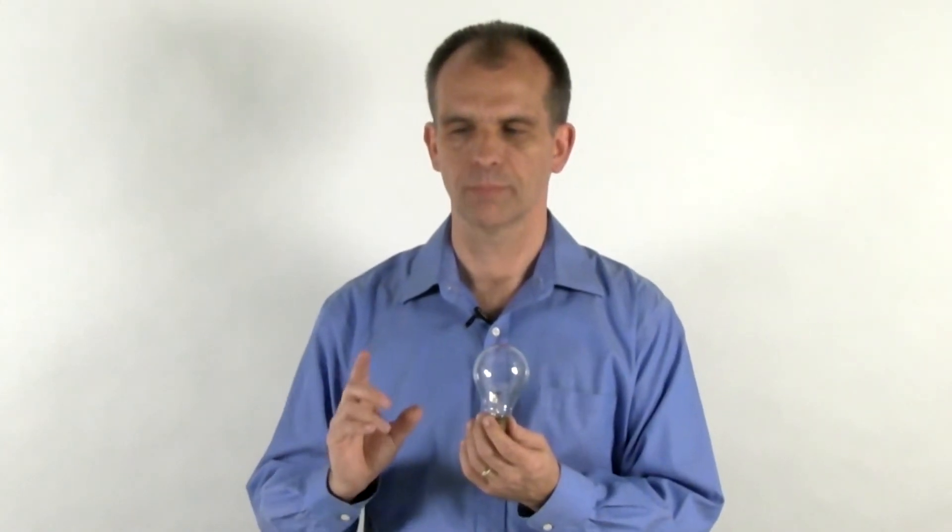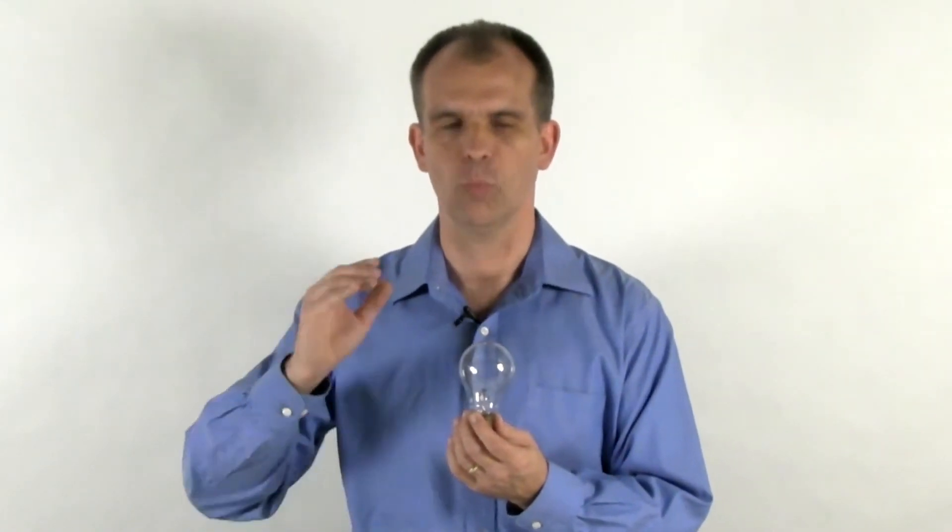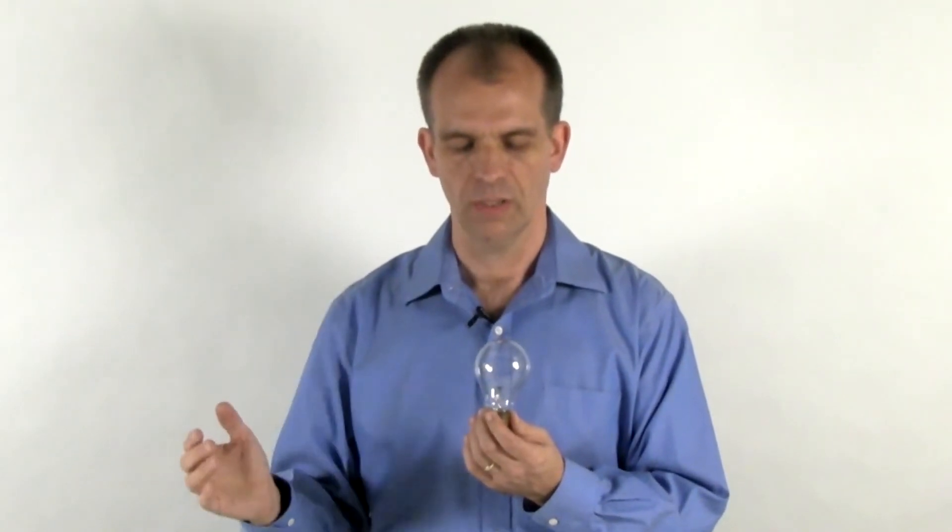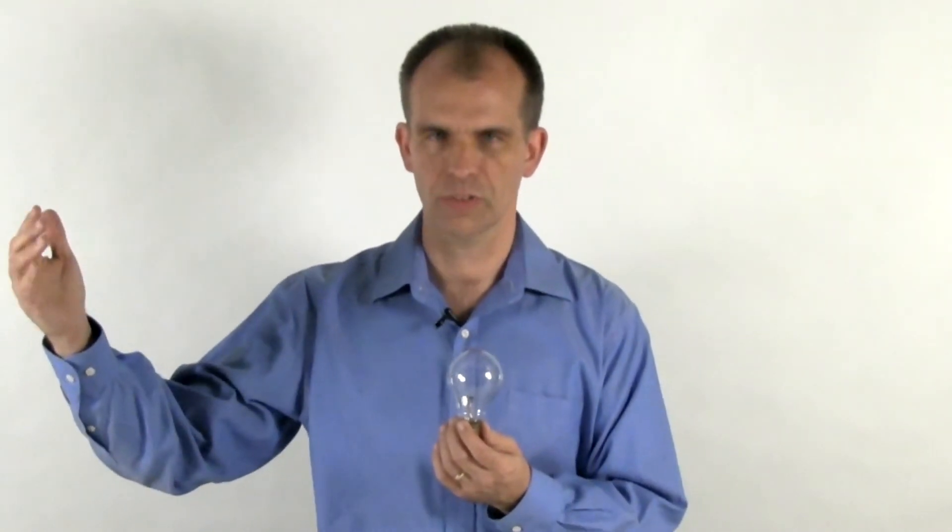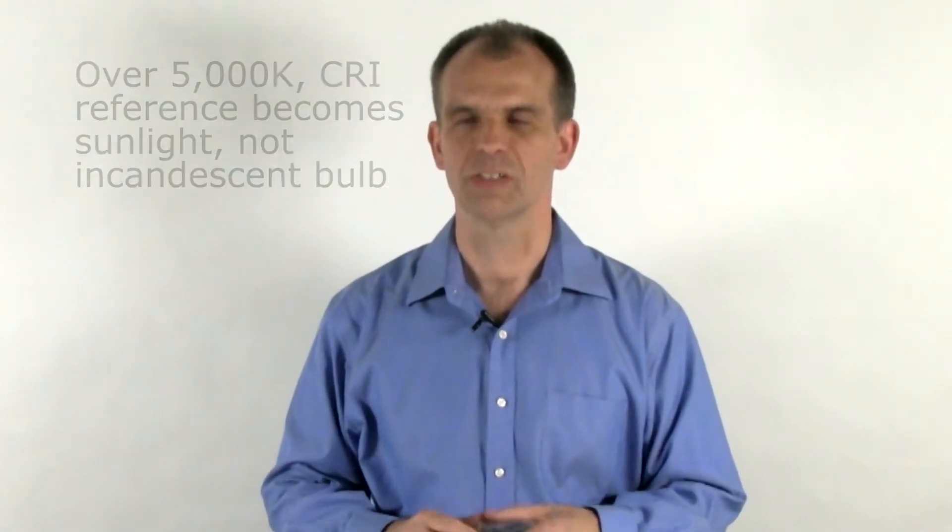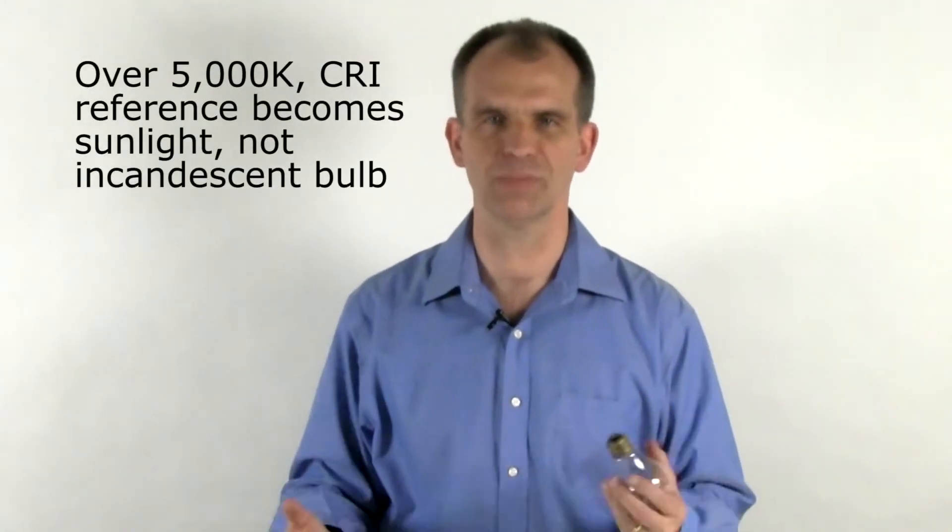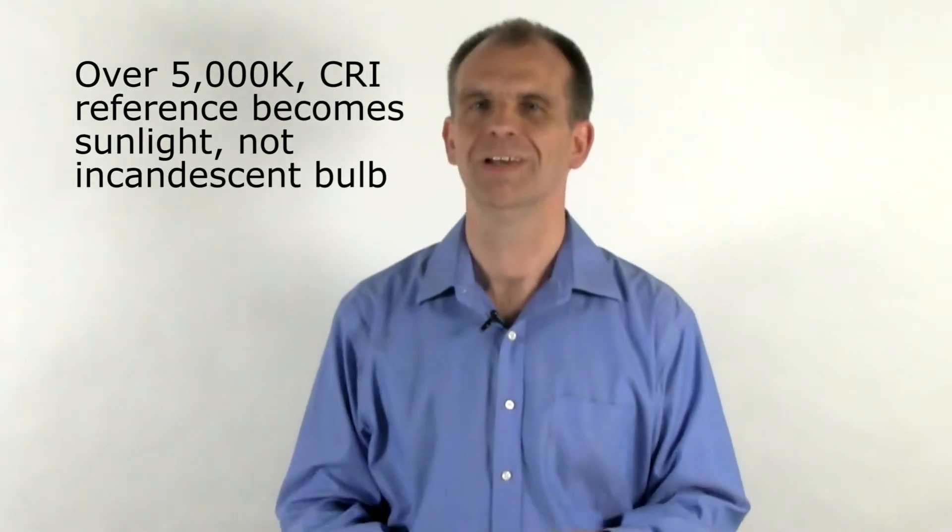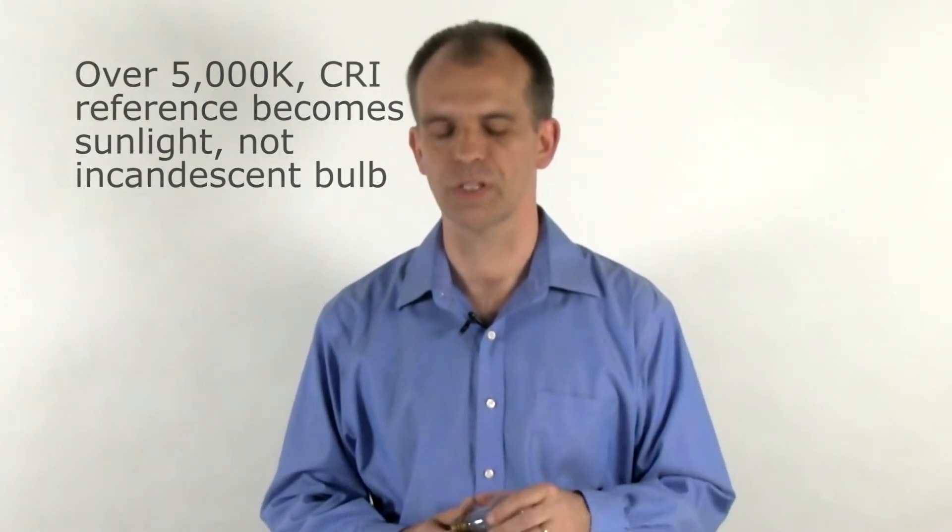That metric also is a little bit more complicated in that once the light source reaches a color temperature of 5000 Kelvin, we stop comparing it to the incandescent light bulb and we compare it suddenly to sunlight, some definition of sunlight because sunlight changes all the time depending on weather conditions and time of day.